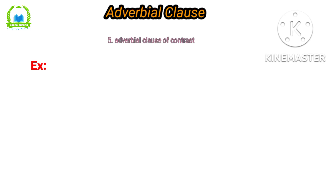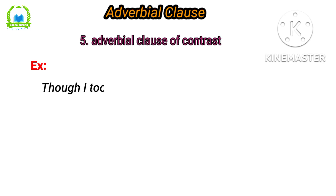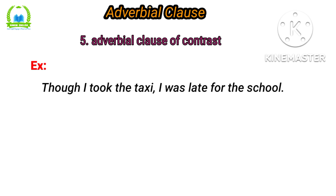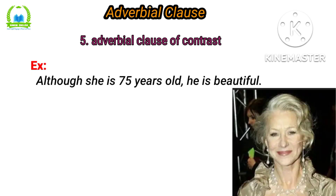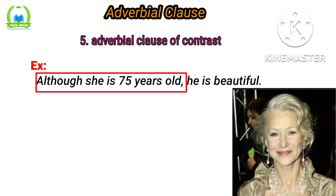The final type is the adverbial clause of contrast. Example: 'Though I took the taxi, I was late for school.' This is contradicting — I took a taxi yet still arrived late. The two statements are contrary to each other. Another example: 'Although she is 75 years old, she is beautiful.' Saying someone aged 75 is beautiful seems contradictory, so the two clauses contrast with each other. This is the adverbial clause of contrast.